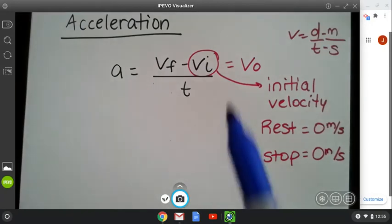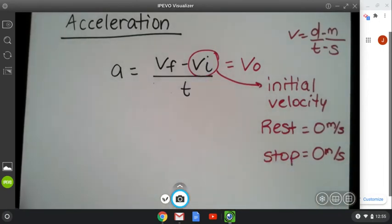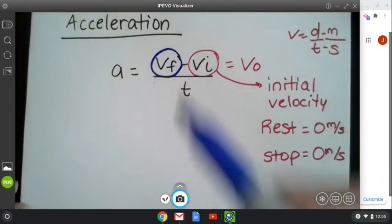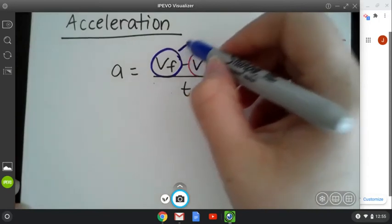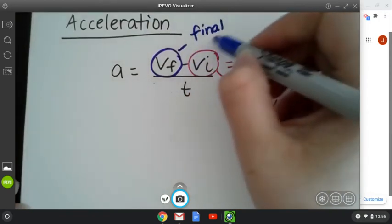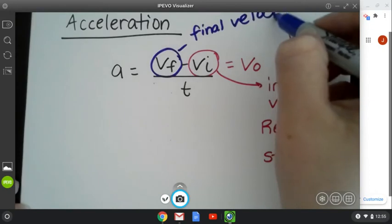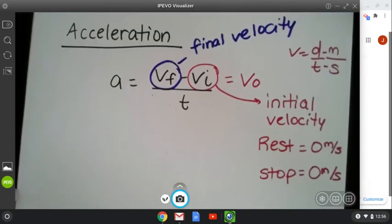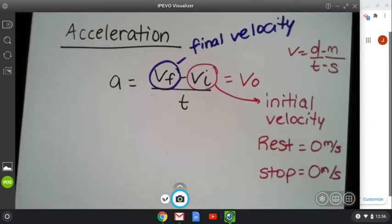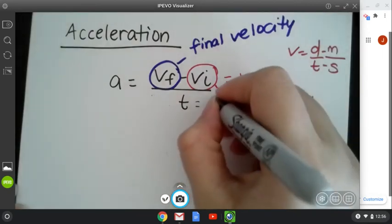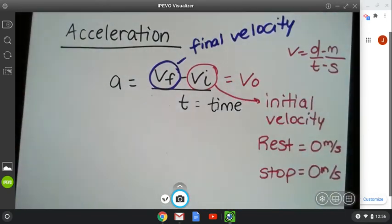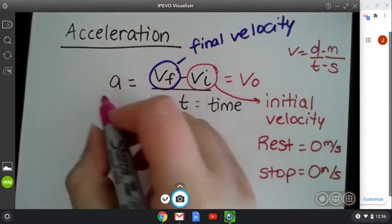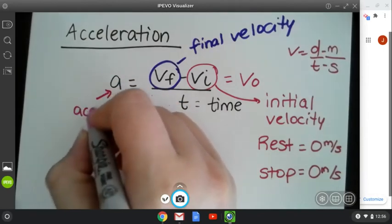Okay, let's go back over here. So we did vi, which is initial velocity. Well, what is vf? Vf is actually going to be your final velocity. T, we've already learned. T is for time. And hopefully, you understand that a is acceleration. So lowercase a stands for acceleration.